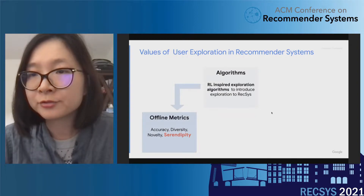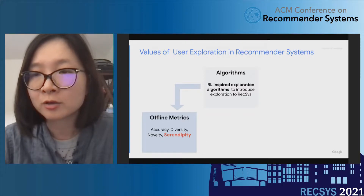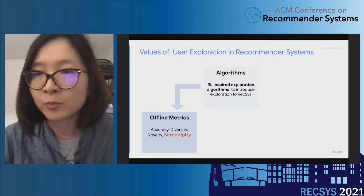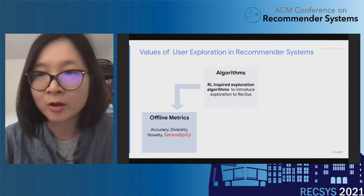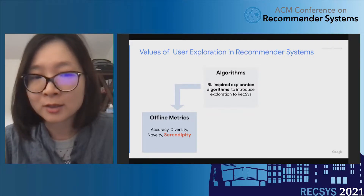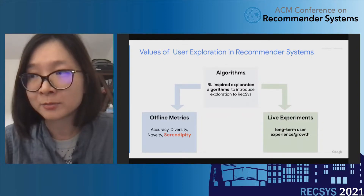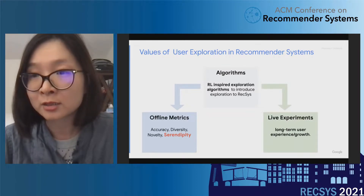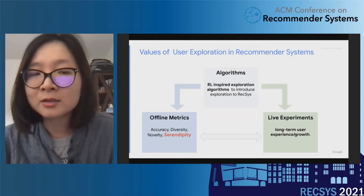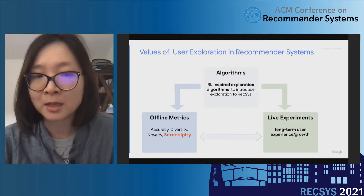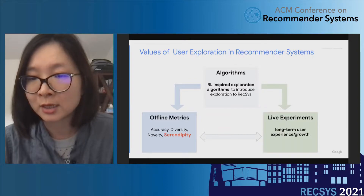So how do we make the connection? We have a three-stage process. First, we introduce several RL-inspired exploration options to introduce more exploration to the recommender system. Then we compare these different exploration strategies on several aspects of recommendation quality, which are accuracy, diversity, novelty, and serendipity. At the same time, we conduct live experiments observing the effect of these different exploration algorithms, measuring how these strategies lead to long-term user experience change. By comparing the offline metrics to the live metrics, we make the connection between recommendation qualities and long-term user growth.